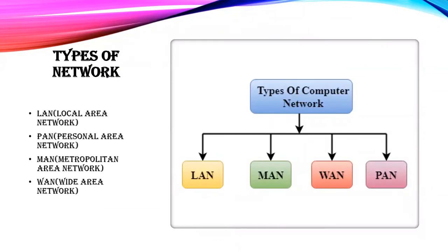Generally there are 4 types of computer networks: LAN is local area network, MAN is metropolitan area network, WAN is wide area network, and PAN is personal area network. In this video we will be learning about LAN, WAN, and switching techniques.